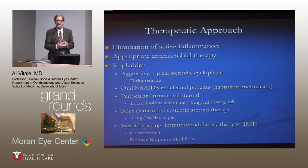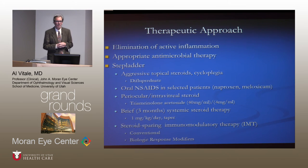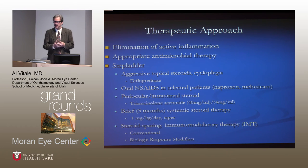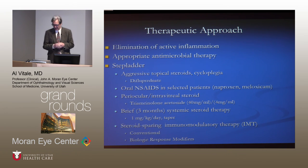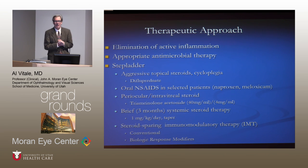The therapeutic approach, as in adults, is to eliminate inflammation and institute appropriate antimicrobial therapy in the face of infection. Then a stepladder graded algorithm depending on clinical response: starting with aggressive topical steroids, followed by oral nonsteroidals in select groups such as kids with arthritic syndromes, then periocular or intravitreal steroids, brief well-defined periods of corticosteroid use, and the early introduction of steroid-sparing immunomodulation with both conventional and biological agents. Julia is going to present our first case, which illustrates some of these points.